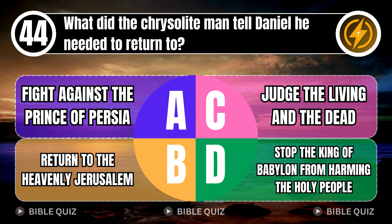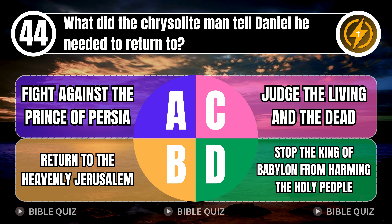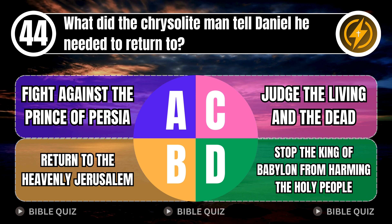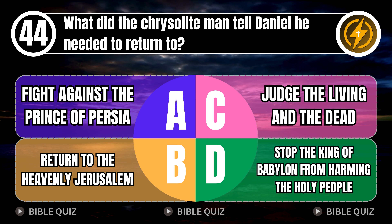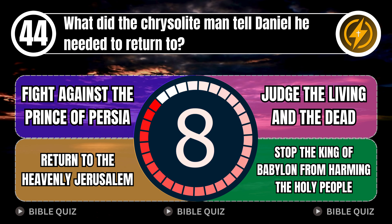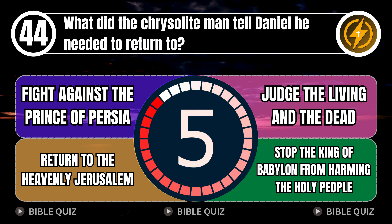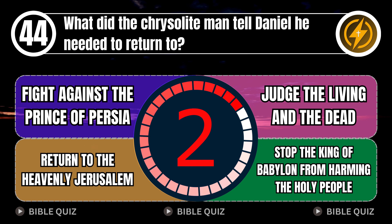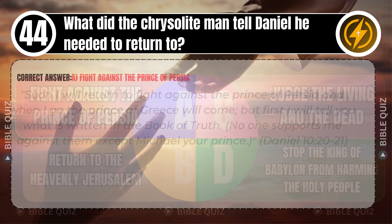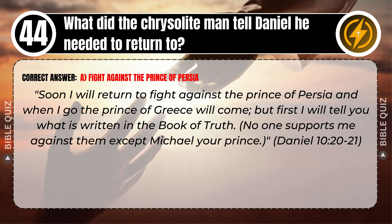Question 44: What did the chrysolite man tell Daniel he needed to return to? A. Fight against the prince of Persia. B. Return to the heavenly Jerusalem. C. Judge the living and the dead. D. Stop the king of Babylon from harming the holy people. Correct answer: A. Fight against the prince of Persia. 'Soon I will return to fight against the prince of Persia, and when I go, the prince of Greece will come. But first I will tell you what is written in the book of truth. No one supports me against them except Michael, your prince.' Daniel 10 verses 20–21.